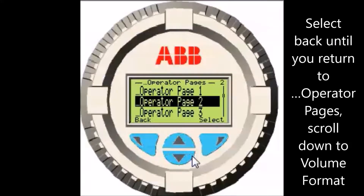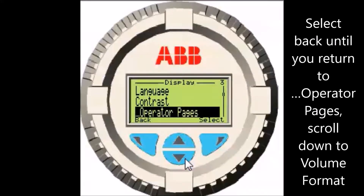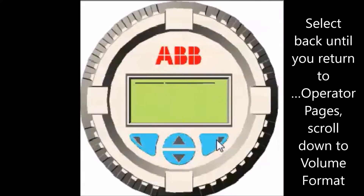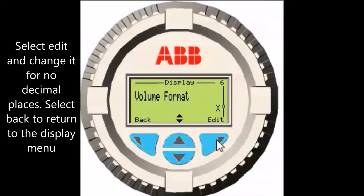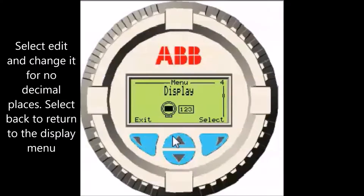Select back until you return to operator pages. Scroll down to volume format, select edit and change it for no decimal places. Select back to return to the display menu.